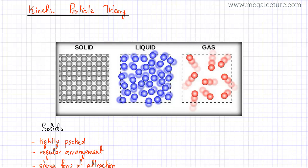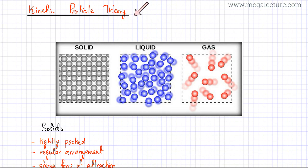In this video lecture, we're going to talk about the kinetic particle theory. What this theory basically states is that you can treat matter as particles — whether they are atoms, whether they are molecules, or compounds — you can treat all of them as tiny particles. So all matter is made up of tiny particles. It's a general theory that could cover everything.